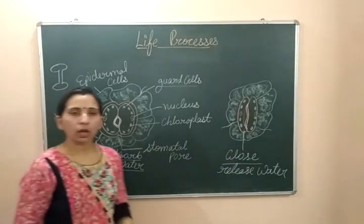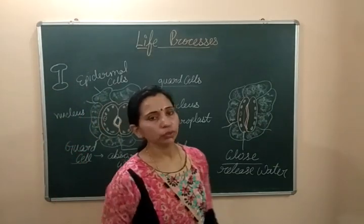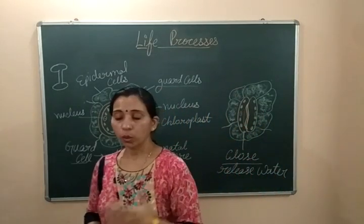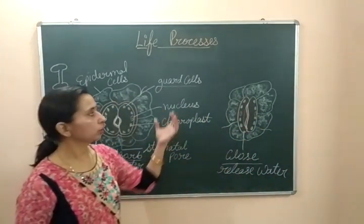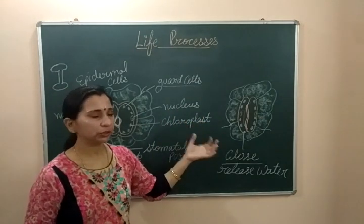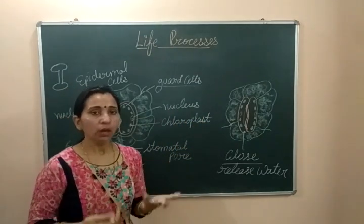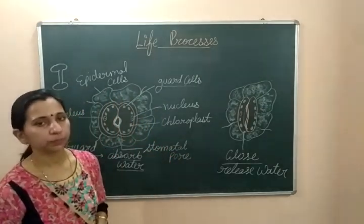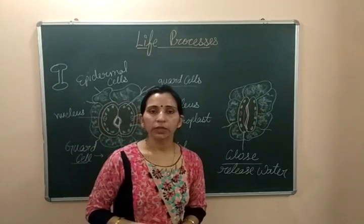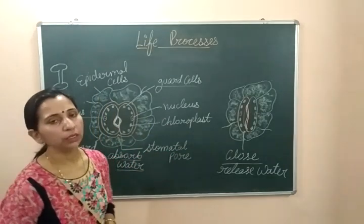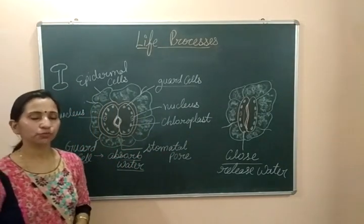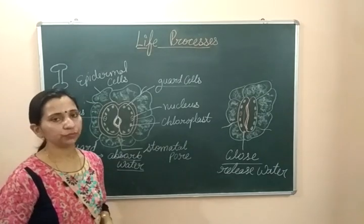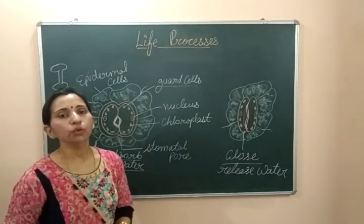Now let's discuss what is the site of photosynthesis. We discussed about the raw material, events, equation, and structure of stomata. Photosynthesis takes place inside the leaves. In the leaves, some special cells are present which are known as mesophyll cells. These mesophyll cells of the leaves are the main site of photosynthesis.